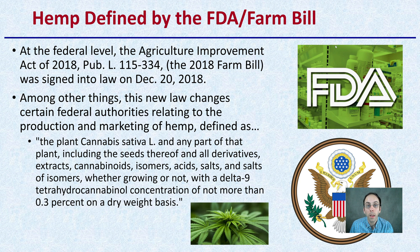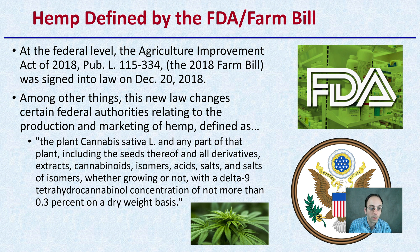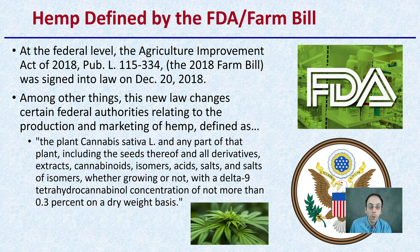We have hemp being defined by the FDA and Farm Bill, particularly the 2018 Farm Bill signed into law on December 20th, 2018. This law changes certain federal authorities relating to the production and marketing of hemp. They define hemp as the plant Cannabis sativa L. and any part of that plant, including the seeds thereof, and all derivatives, extracts, cannabinoids, isomers, acids, salts, and salts of isomers, whether growing or not, with a delta-9 tetrahydrocannabidiol concentration of not more than 0.3% on a dry weight basis. That is delta-9 THC. So hemp is defined as not more than 0.3% THC dry weight by the FDA and the 2018 Farm Bill.